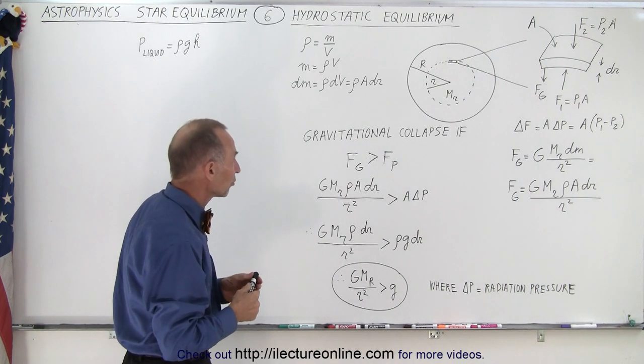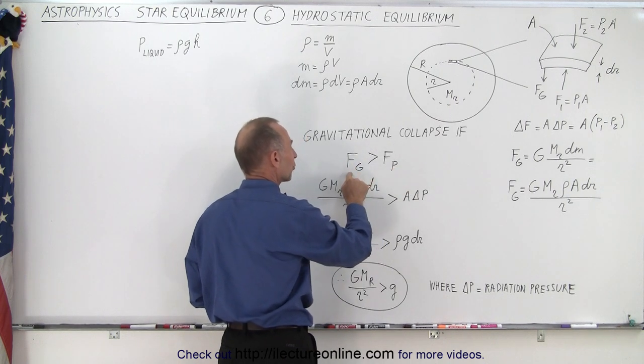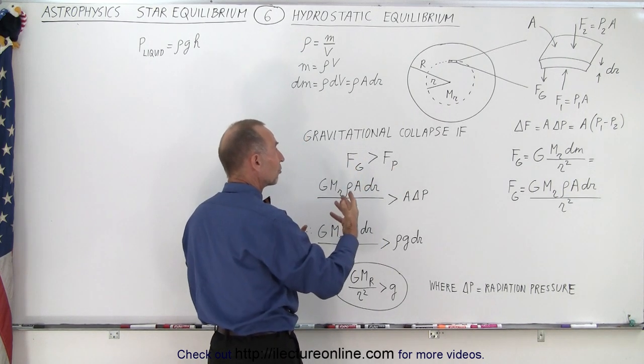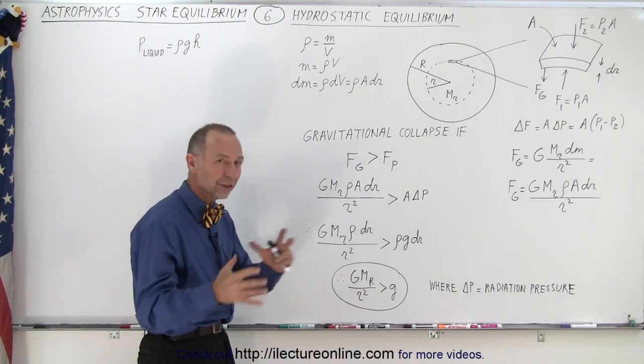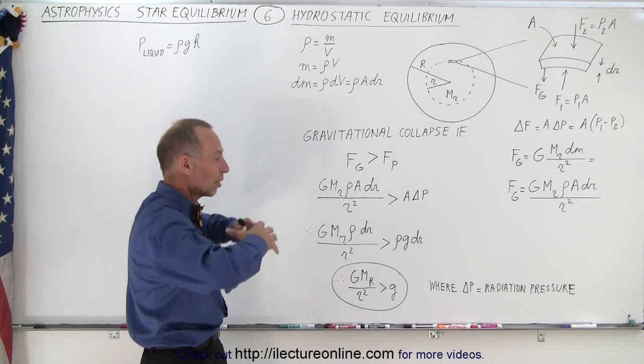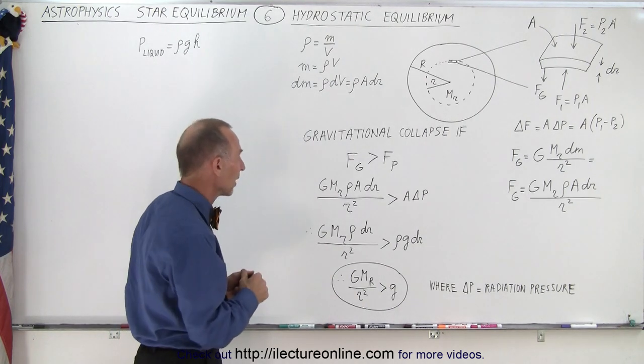So to prevent gravitational collapse, we need to have pressure that is greater than the force of gravity. We will have gravitational collapse if we have a force of gravity greater than the force of the pressure. So until that balance is reached, either the star will expand, or the star will contract until those two match one another.